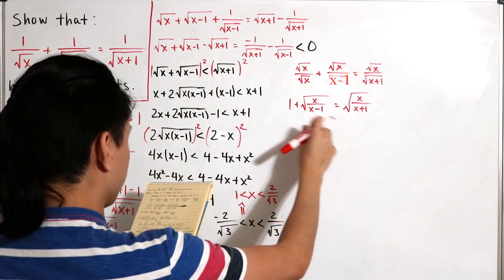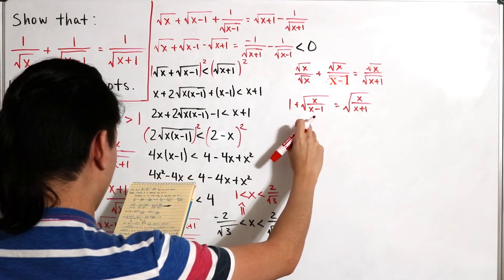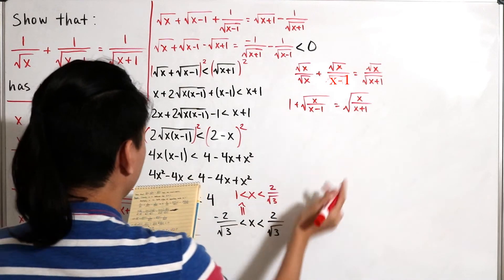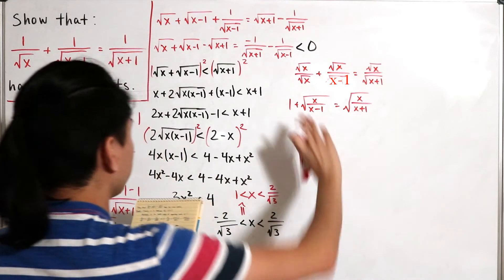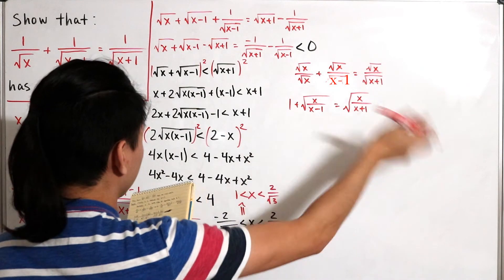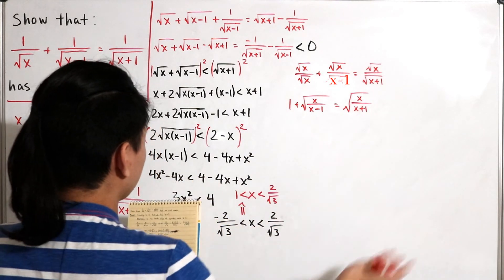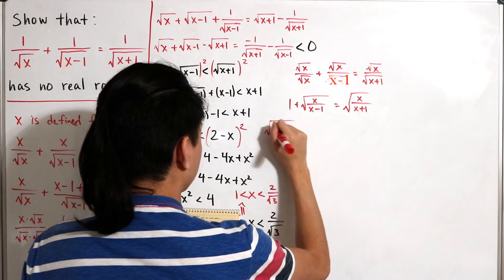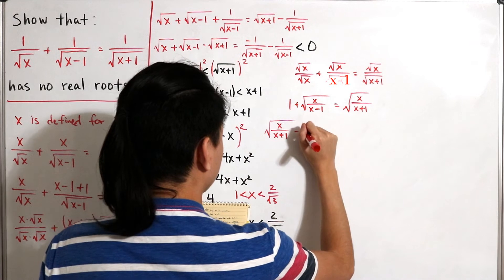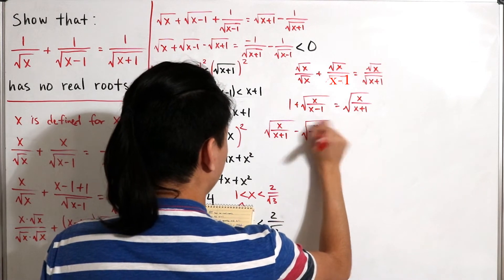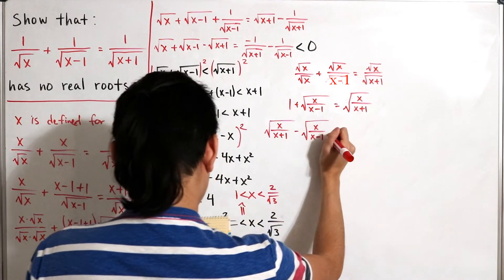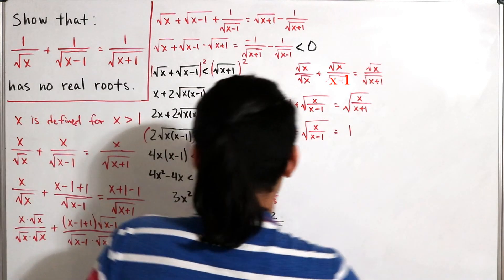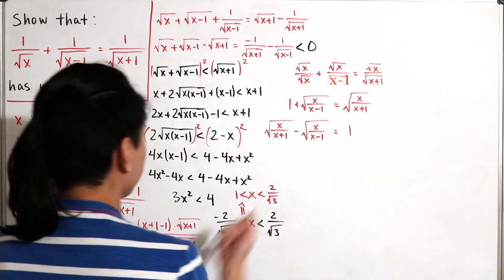The terms simplify using exponent rules — the square root of x divided by x gives the square root of x over x minus 1, and similarly for the right side: the square root of x divided by x plus 1. Subtracting the square root of x over x minus 1 from both sides, we're left with 1 on the right side. Flipping the equality, the square root of x over (x plus 1) minus the square root of x over (x minus 1) equals 1.